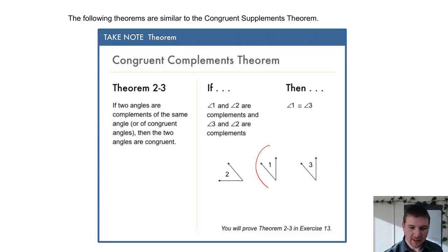In this case, angles one and three would be congruent because they're both complements or complementary to angle two.